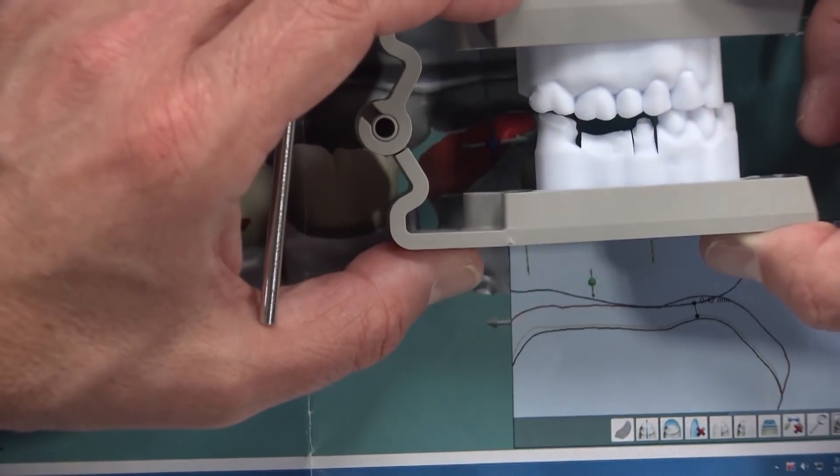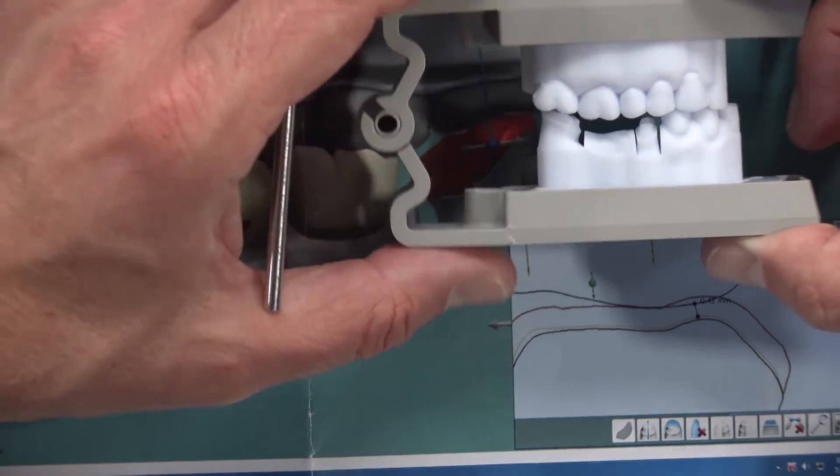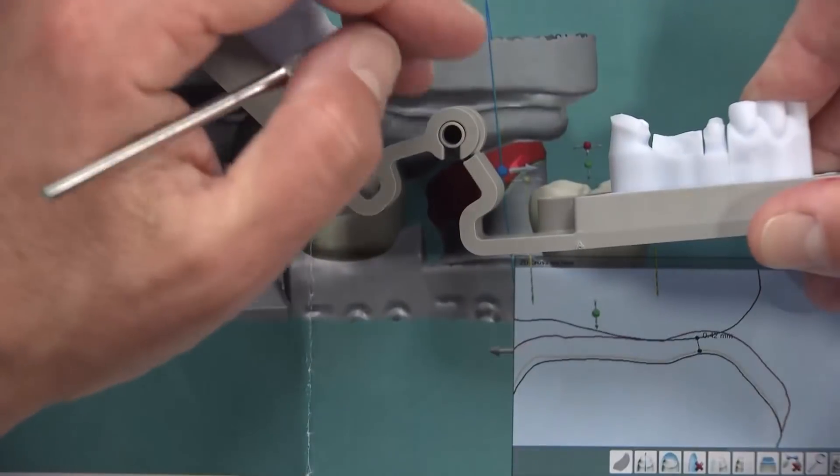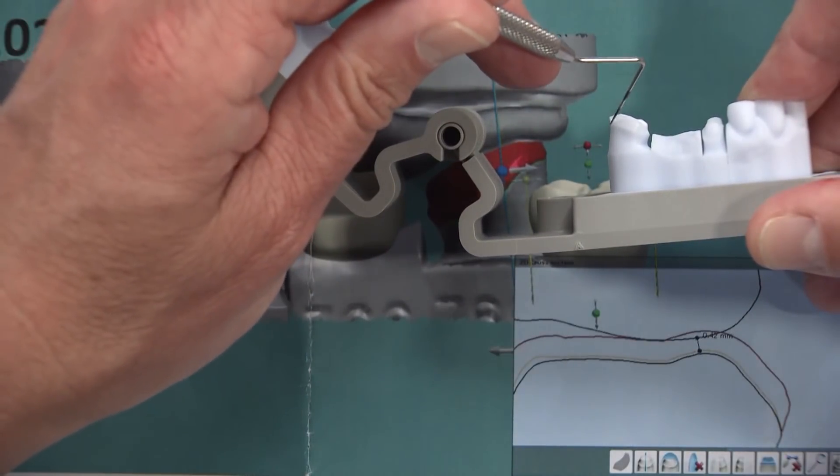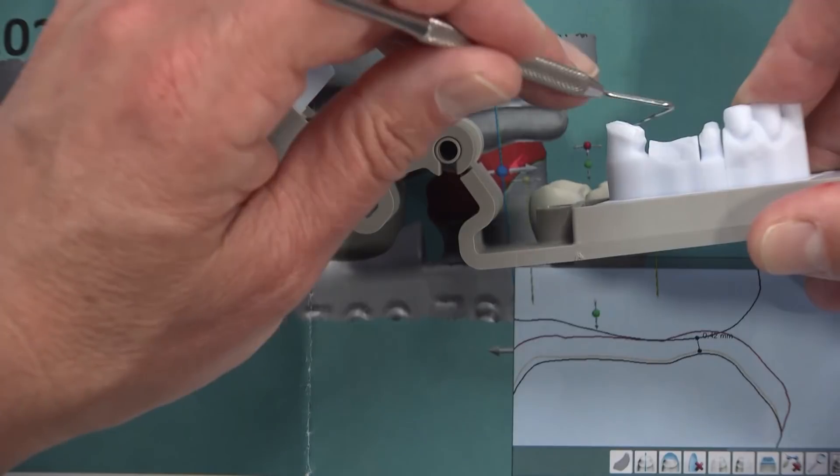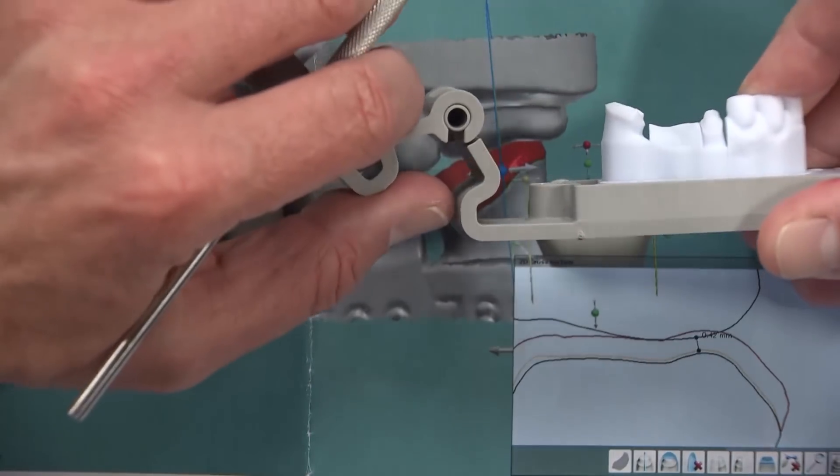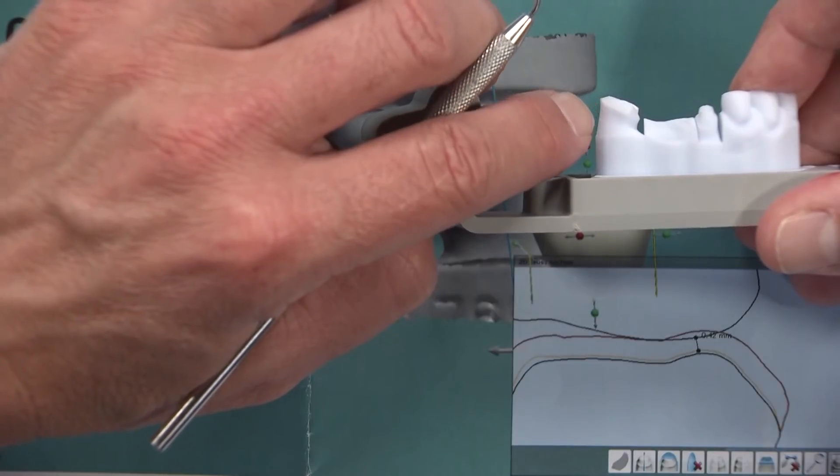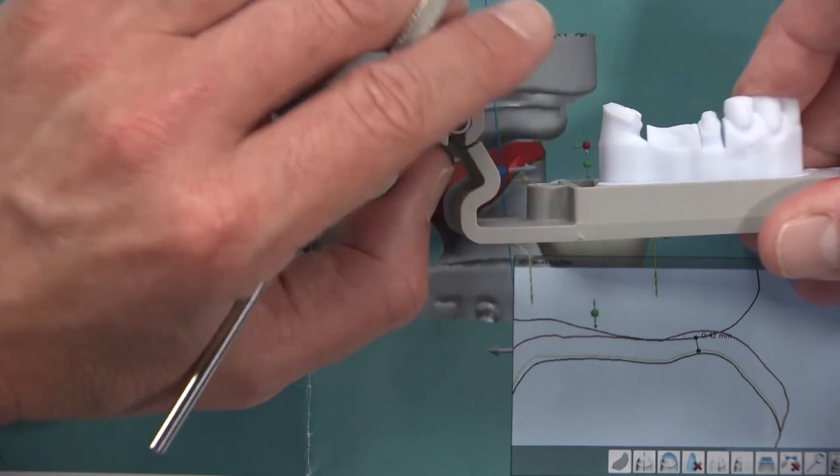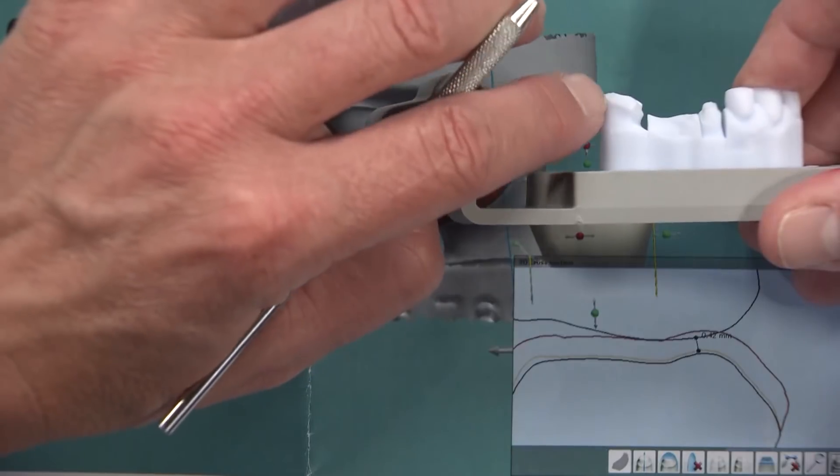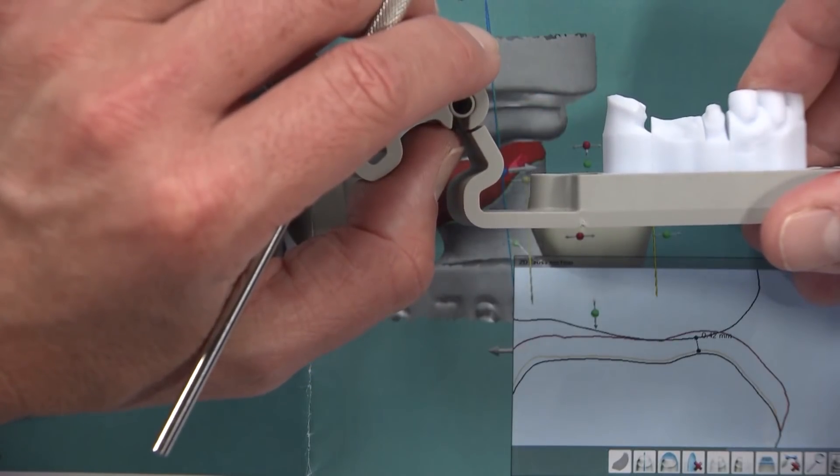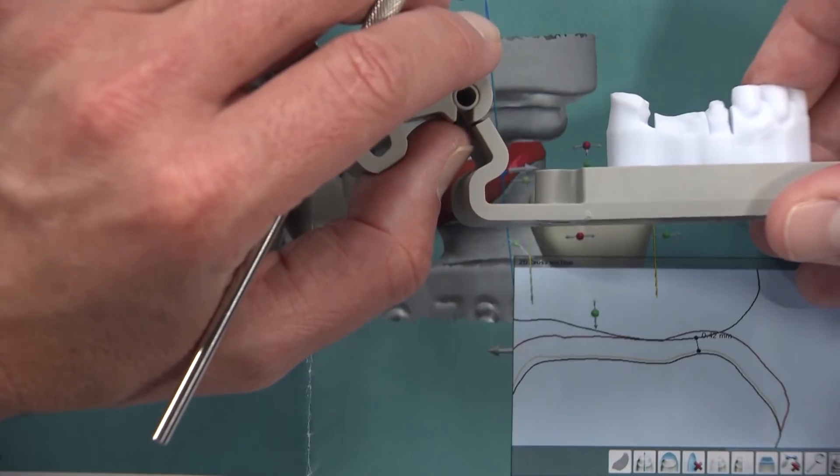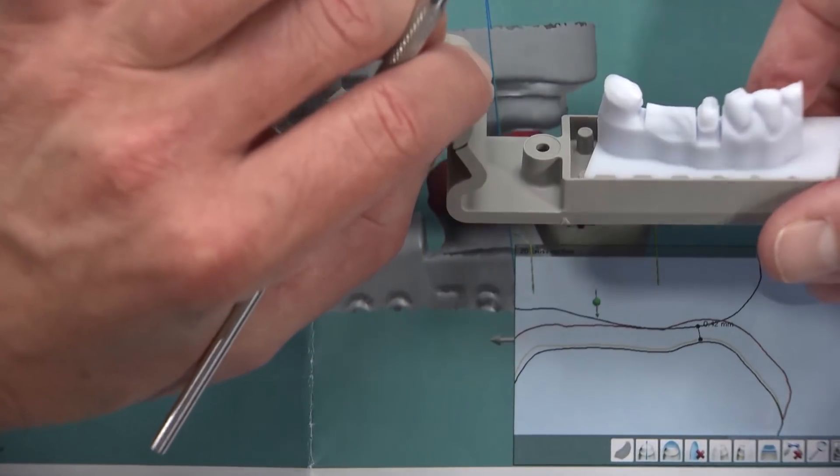It would have to be a PFM bridge. And actually, when you see how non-retentive this distal wall is on this tooth, getting a zirconia bridge to bond to this and stay in place might be difficult too. So you're actually probably better off with a PFM bridge here because you can bond to that non-precious metal, the substructure of the bridge, much better than you could to the zirconia and get a higher bond strength. So the PFM bridge may end up actually being the better idea in a case like this.